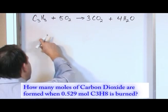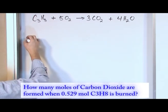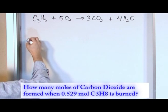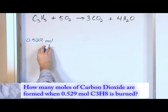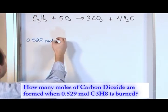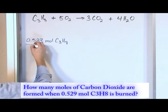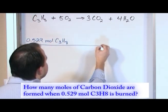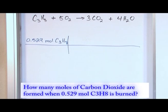What you do is write down what you know. You always write down what you know. What we know is we have 0.529 moles — and don't just put moles down, you have to say moles of what — moles of C3H8. I draw my horizontal line and my vertical line. What we're going to do is a unit cancellation here. This is one of the first things I taught you in Chemistry, and this is why it's so important.